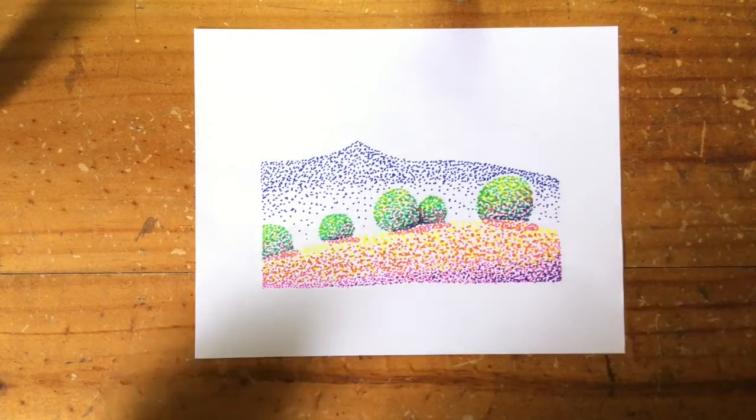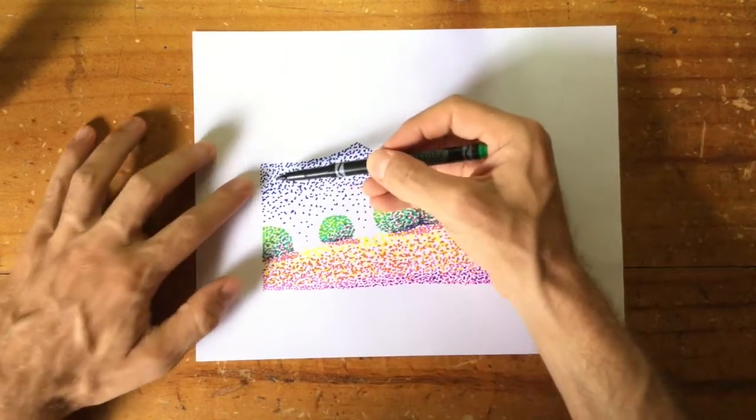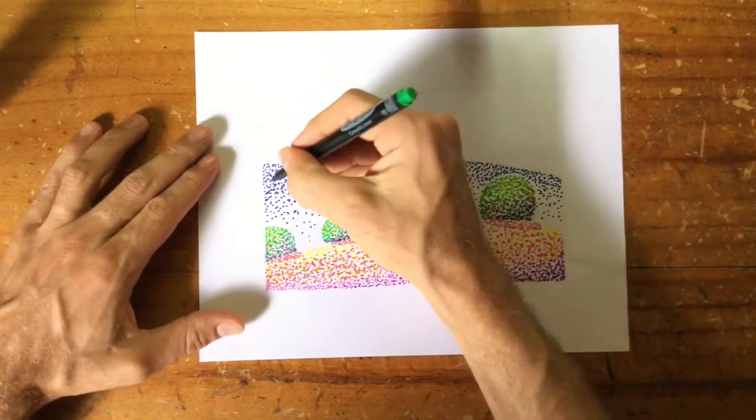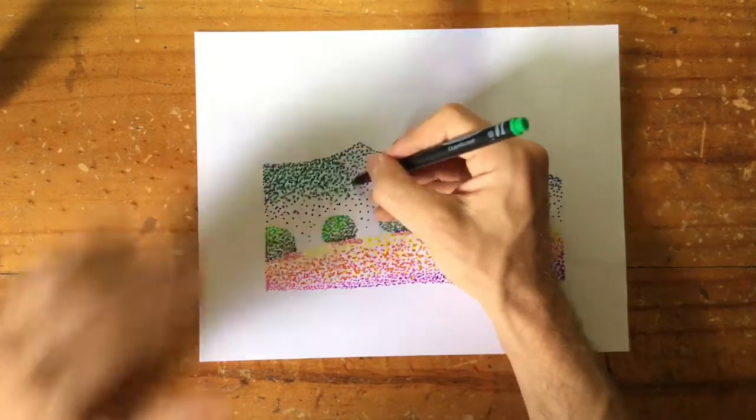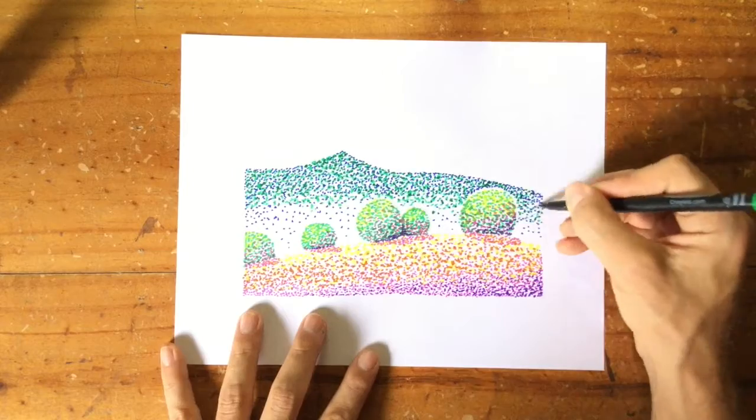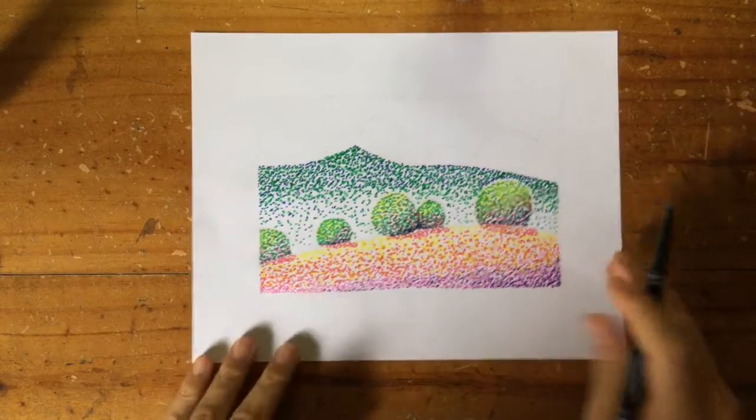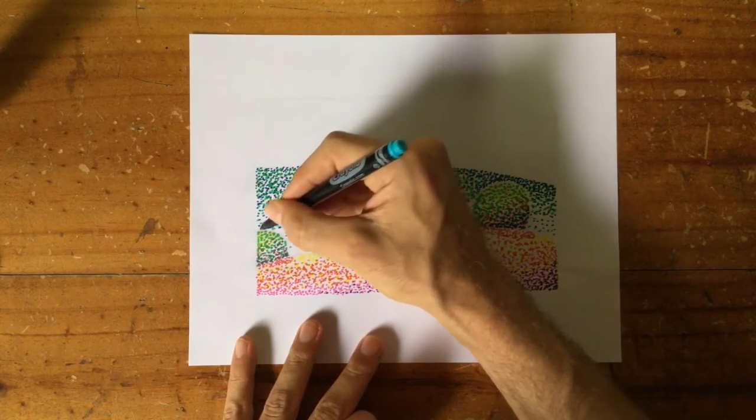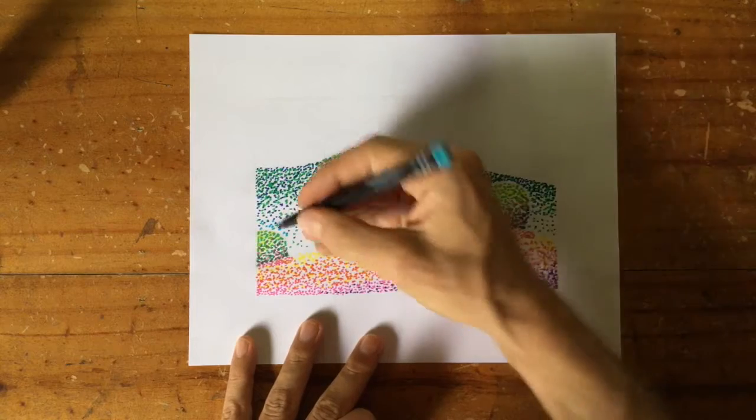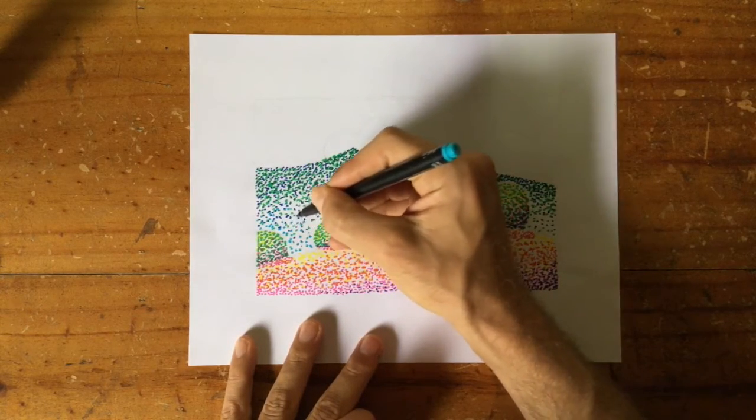Now we're going to mix some green into this. And same kind of thing, like more dense and compact at the top and spreading out as we move down. And now I have a lighter blue. The lighter blue is going to mix in to this area where the dots are more spaced out.